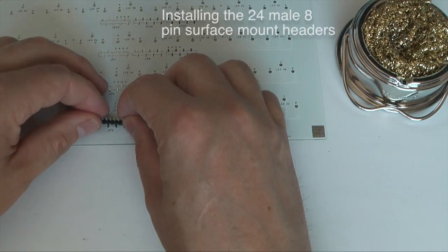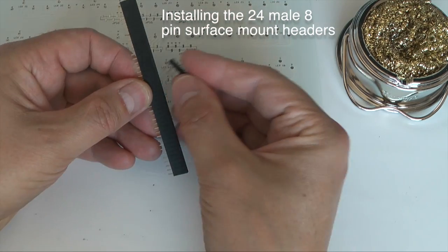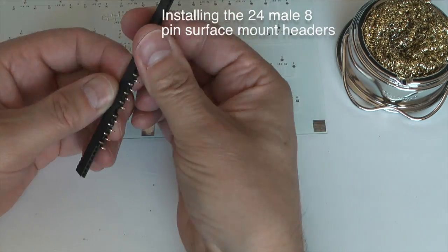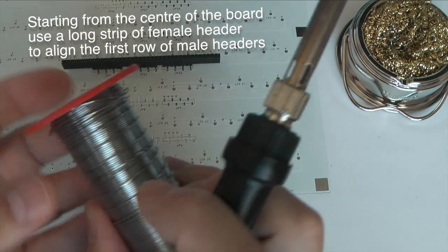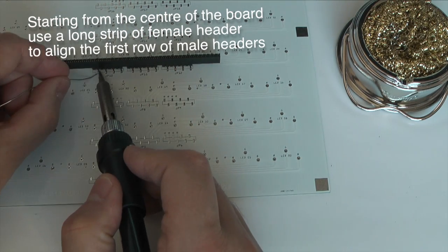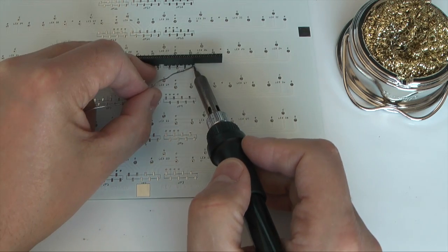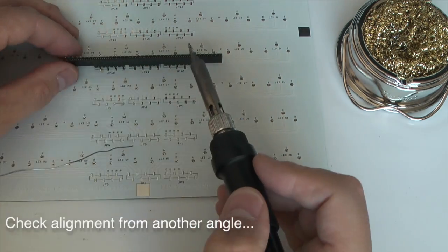I wanted the top surface of my base PCB to be as clear of clutter and solder joints as possible, so I decided to use surface mount connectors on the underside. I used a long strip of female header to align the three eight pin male headers to keep them in an absolute straight line when placed on the circuit board.